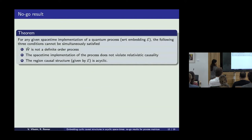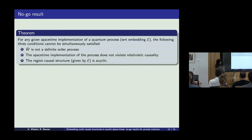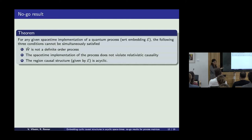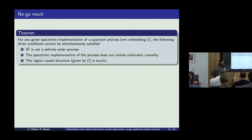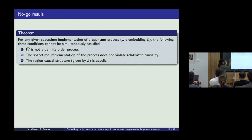Already at this level, before going further into the framework, we can state our no-go result. It's an entirely graph-theoretic statement telling us that three conditions, which seem fairly reasonable, cannot be simultaneously satisfied. The first is that the process is not a definite ordered process — ensuring we're talking about something interesting. The second is that we're talking about an implementation of this process in spacetime that does not violate relativistic causality. And the third is that the region causal structure formed by the embedding should be acyclic. These three conditions cannot hold together.